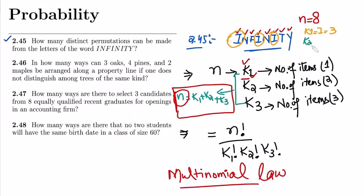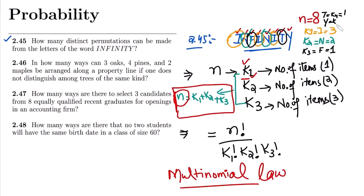For k2, let's take the letter 'n.' We have 1n and 2n, so k2 equals 2. For k3, we have the letter 'f' — let me use a different color — and there is one 'f,' so k3 equals 1. The last letters are 't' and 'y,' so k4 equals 1 for 't' and k5 equals 1 for 'y.'